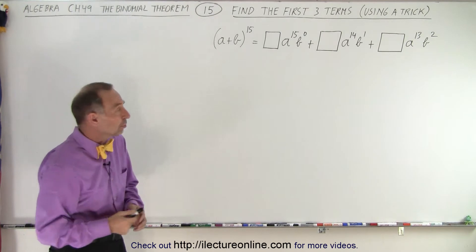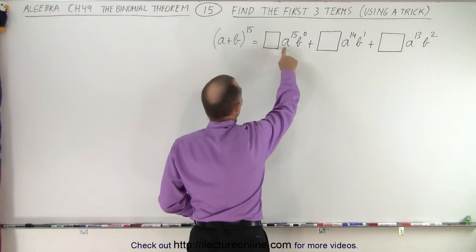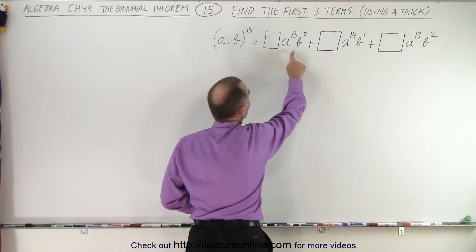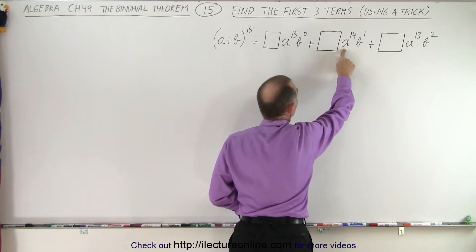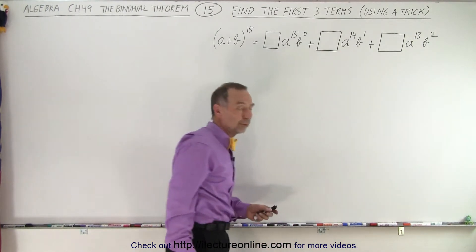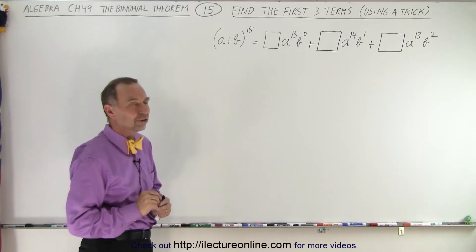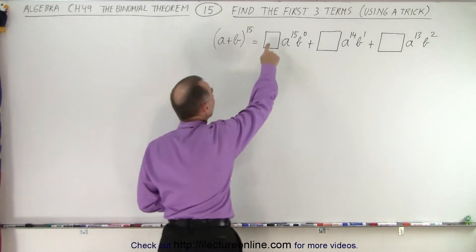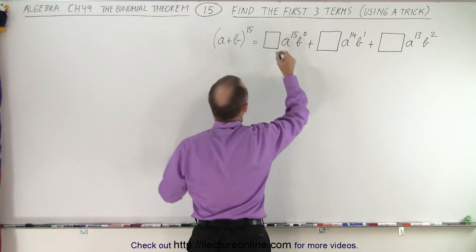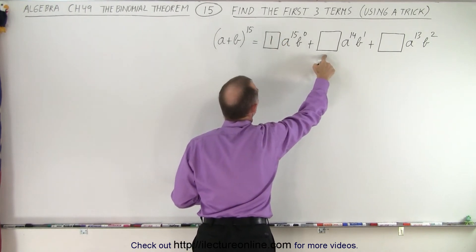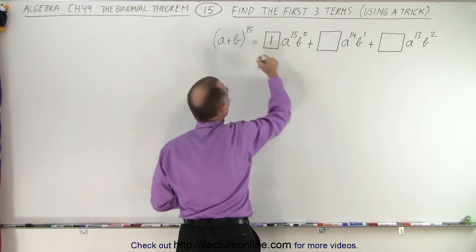All right, the exponents on a and b are easier to find. We start with a to the 15 and b to the 0. Then we subtract 1 from the exponent for a and add 1 for the exponent for b. So that's pretty easy to do. What about the numerical coefficients? Well it turns out that the first one is always going to be equal to 1, and the second numerical coefficient is always going to be equal to the exponent right here.